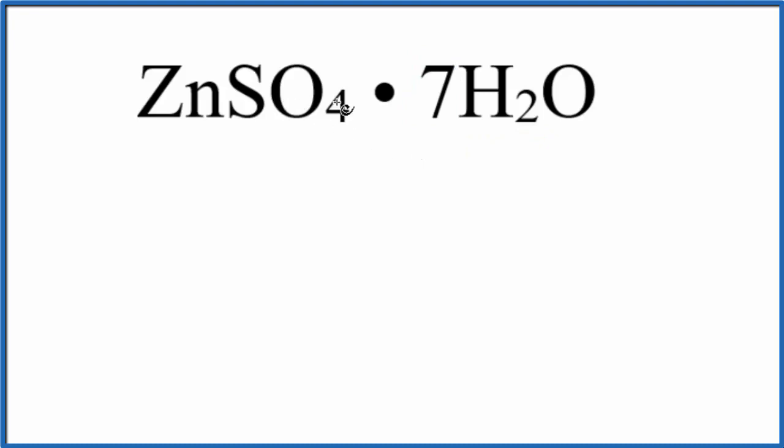So essentially we have a zinc sulfate here, and there are seven water molecules around it. So this dot just means that we have these seven water molecules around the ZnSO4.